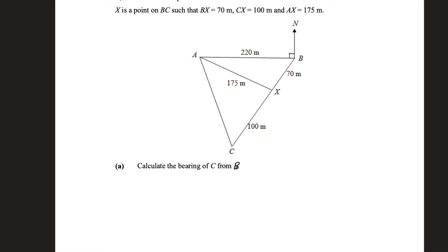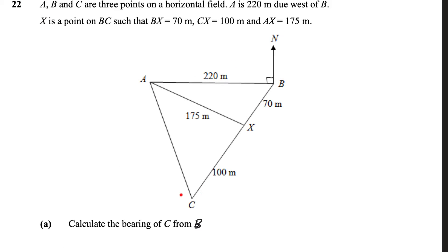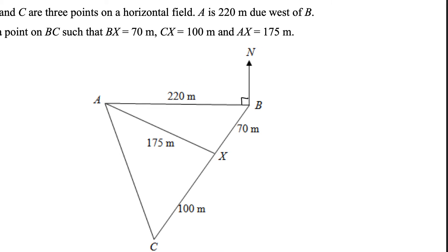Question one, part A. Calculate the bearing of C from B. So let's see, bearing of C from B, so we put the north at B, and then we want to get clockwise all the way until we hit C. So we are trying to find this.